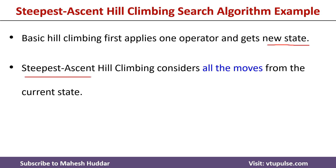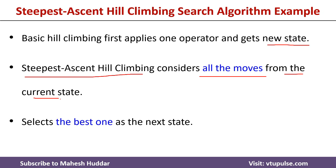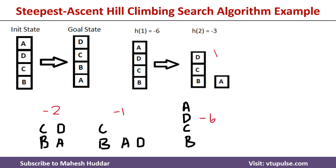But in the steepest ascent hill climbing algorithm, we consider all possible moves from the current state and then select the single best move as the next state. So the key difference is: in simple hill climbing, we apply an operator and if it is better than the current heuristic value, we accept it. In steepest ascent hill climbing, we apply all operators and select the one with the best heuristic value.